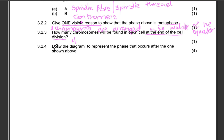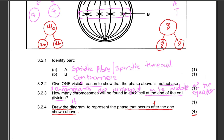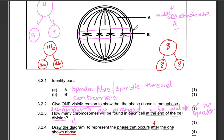Question 3.2.4: Draw the diagram to represent the phase that occurs after the one shown above. That phase is anaphase — the phase after metaphase. In anaphase, the centromere splits and the chromatids are pulled to opposite poles. Make sure you use the chromosome number given; in our metaphase diagram we have 4 chromosomes.